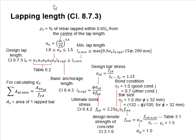The alpha 6 here will range between 1.0 to 1.5. It is determined based on the equation here in the functions of rho 1. The rho 1 represents the percentage of reinforcement bar being lapped within 0.65 Lo from the center of the lap length.